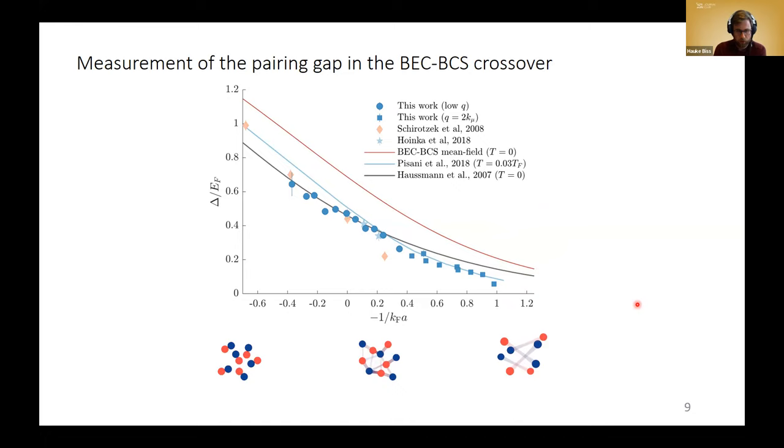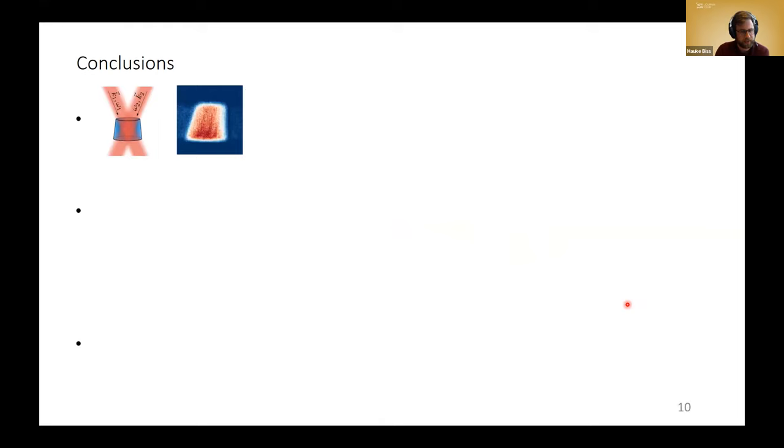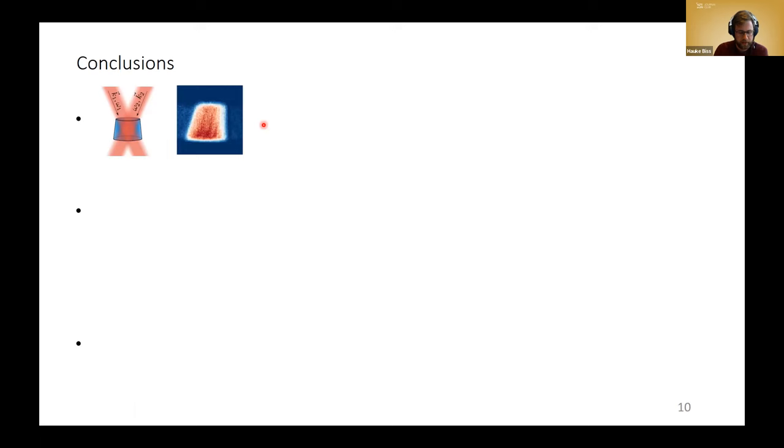This plot is the key result of my talk. We can measure a central property of the BEC-BCS crossover in a clean model system. We can first compare to previous experiments and we see that they agree perfectly. Then we can compare it as a quantum simulation to numerical calculations of this Hamiltonian. I added here three curves. The red one is the mean field calculation. It describes the behavior but does not fit our measured data. But this is expected because we're in a strongly correlated regime. The black curve is a self-consistent T-matrix calculation. It agrees excellently with the data on the left but then overestimates our data on the right. Another recent theory, a strong coupling calculation shown in blue, also includes particle fluctuations in this crossover regime. This one agrees better with the data in the BCS regime but lies above our data on the left. So you see that this is not conclusive. However, our measurements provide a tool to calibrate and benchmark the theory.